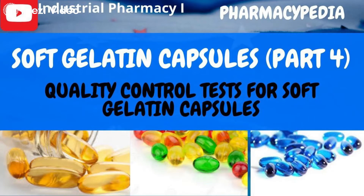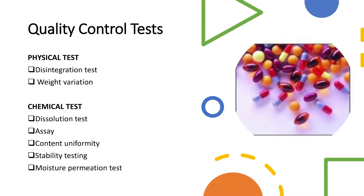Welcome to this session from Pharmacypedia. We will discuss the quality control tests for soft gelatin capsules. These tests comprise two parts: physical tests and chemical tests. The physical tests include the disintegration test and the weight variation test. The chemical tests include dissolution, assay, content uniformity, stability testing, and moisture permeation test.